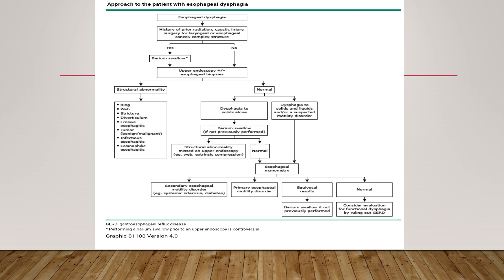Esophageal manometry will lead to a diagnosis of secondary esophageal motility disorders such as systemic sclerosis or diabetes, or primary esophageal motility disorders. Equivocal results may require barium swallow if not previously done. If all results are normal, consider evaluation for functional dysphagia by ruling out other causes.